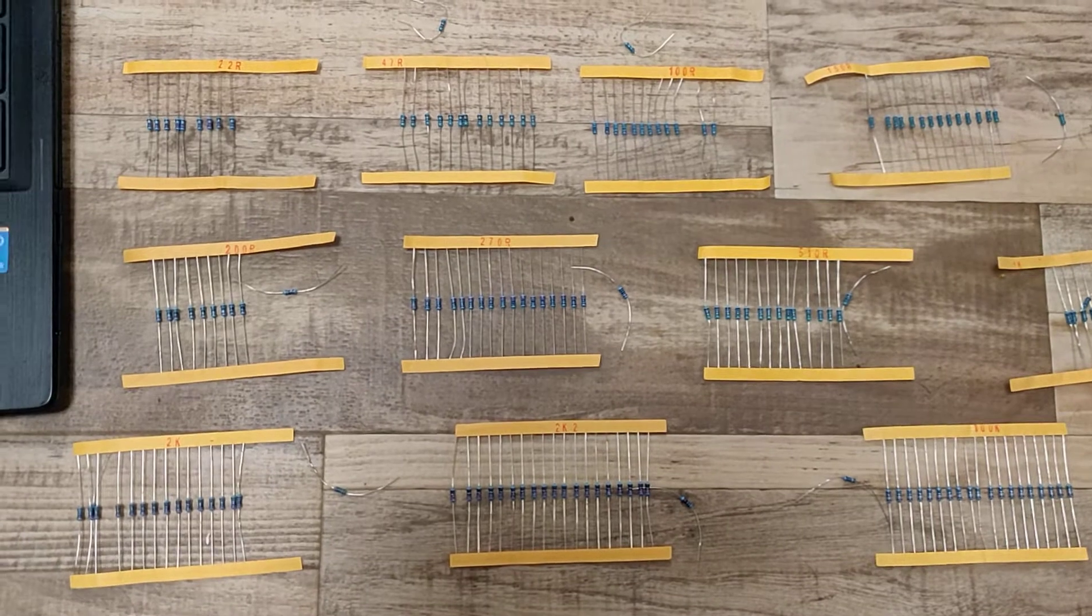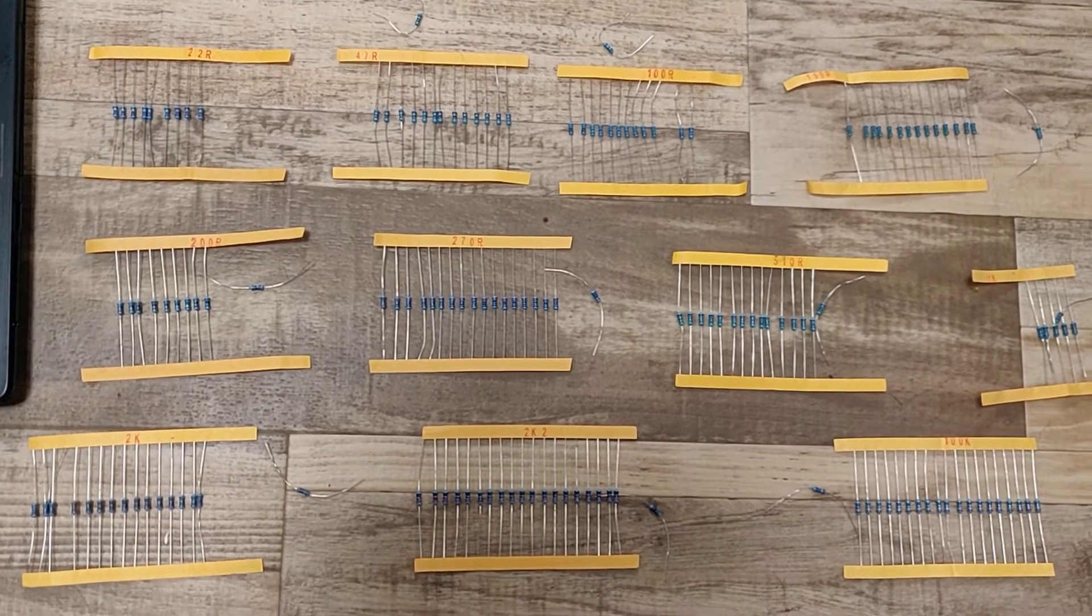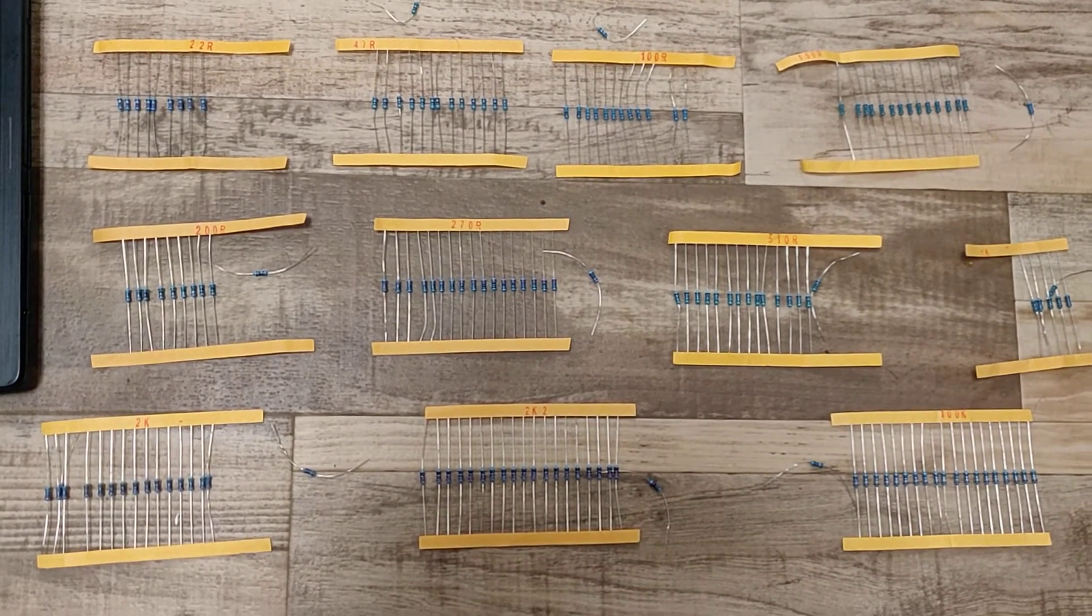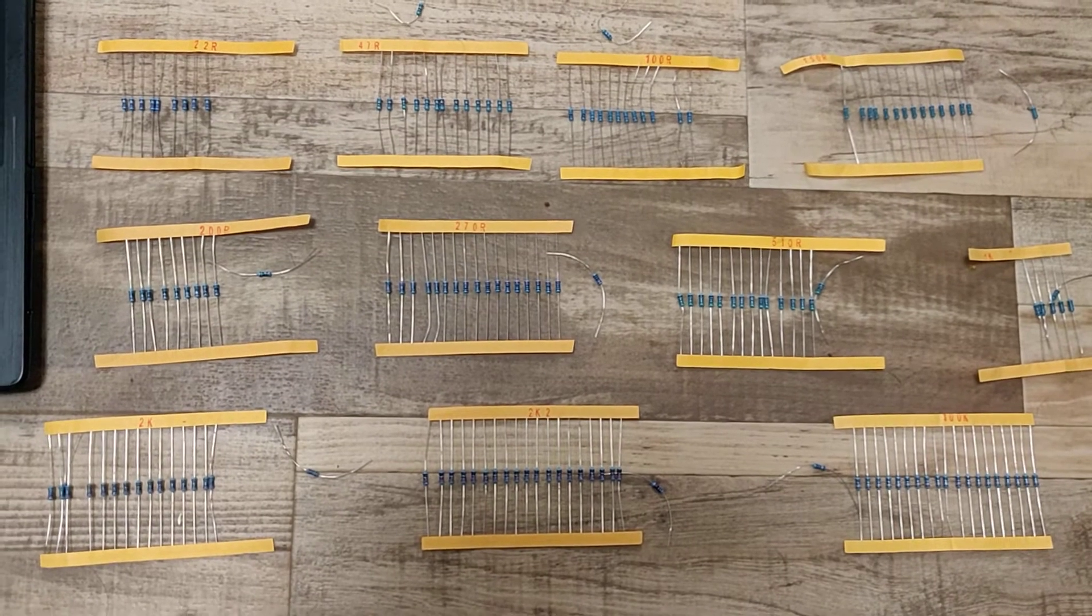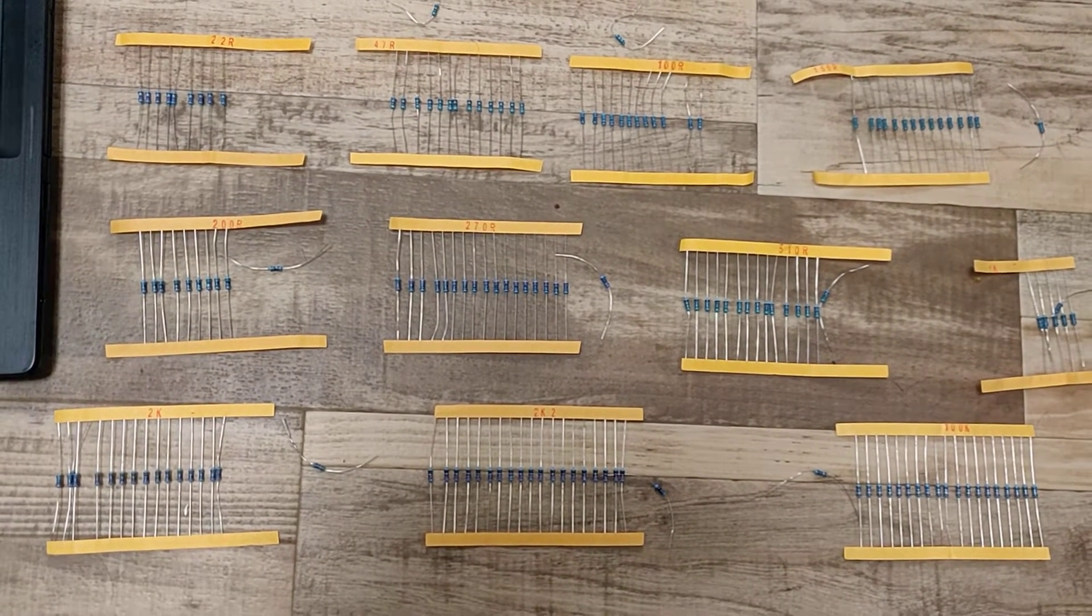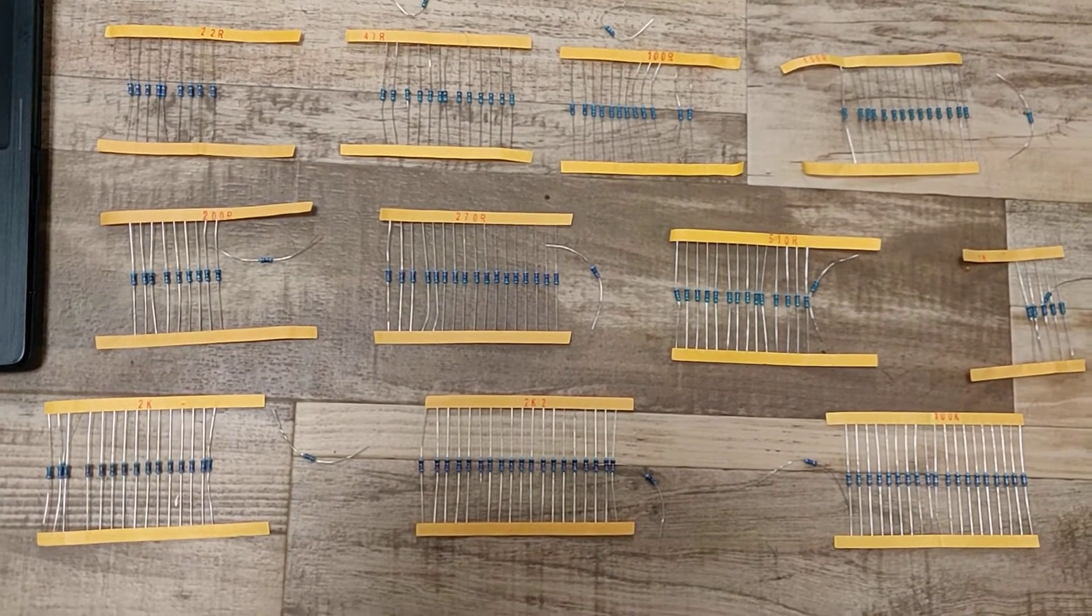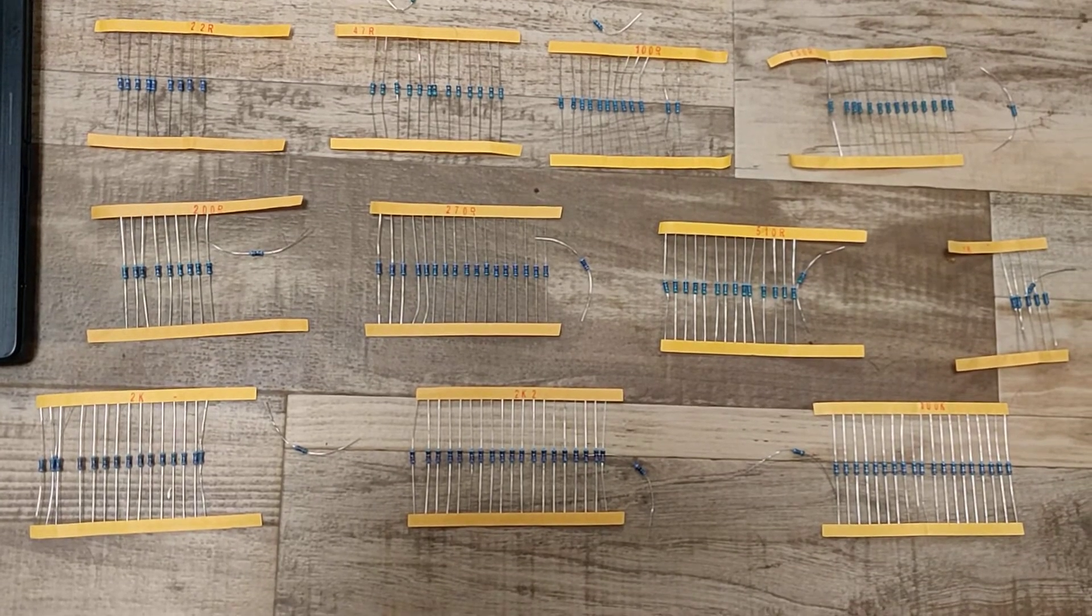These are the different resistors which range from 22R to 100K ohm. These resistors are being used in the place of R3.